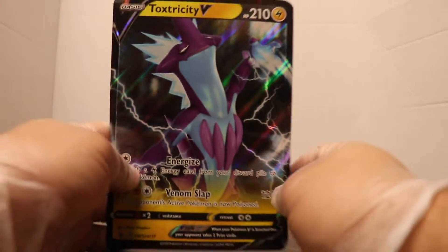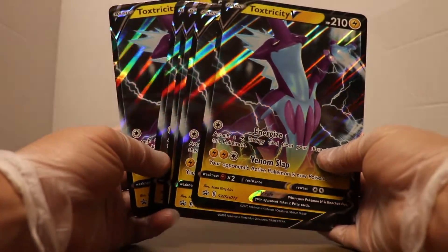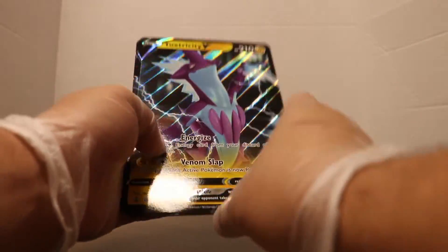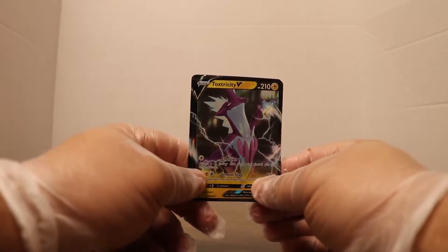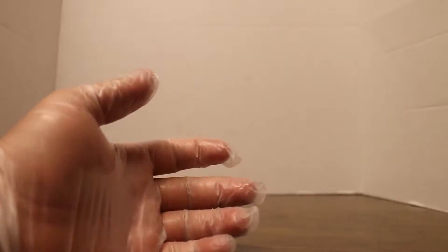First off, we're going to start off showing you guys the Toxtricity giant size promo. Look at that, having it like this looks really clean. We need to find some giant promo size sleeves because I don't have any. Then we have our Toxtricity. We have five of these really cool promos, super hyped about that.